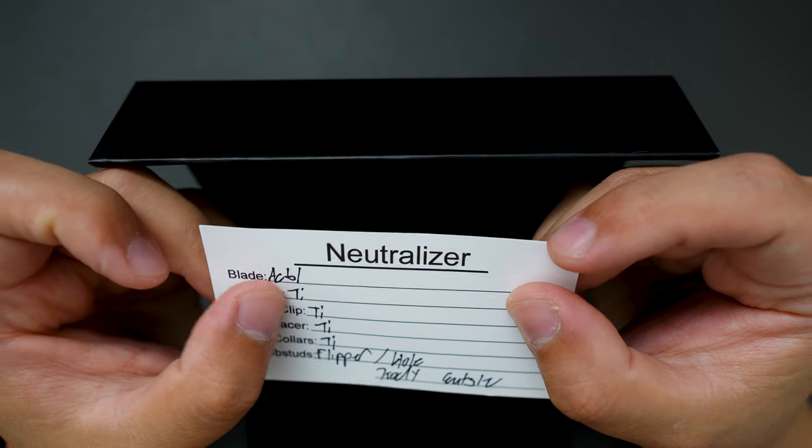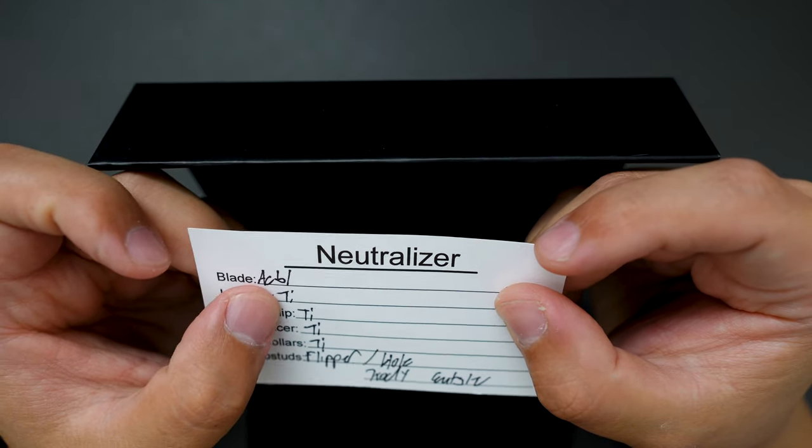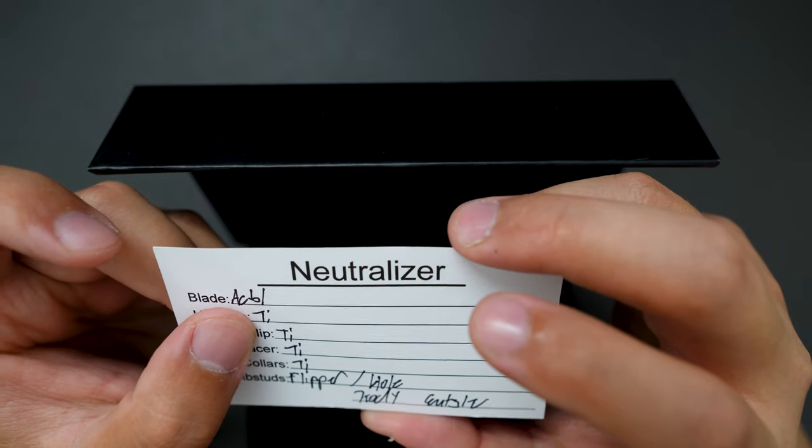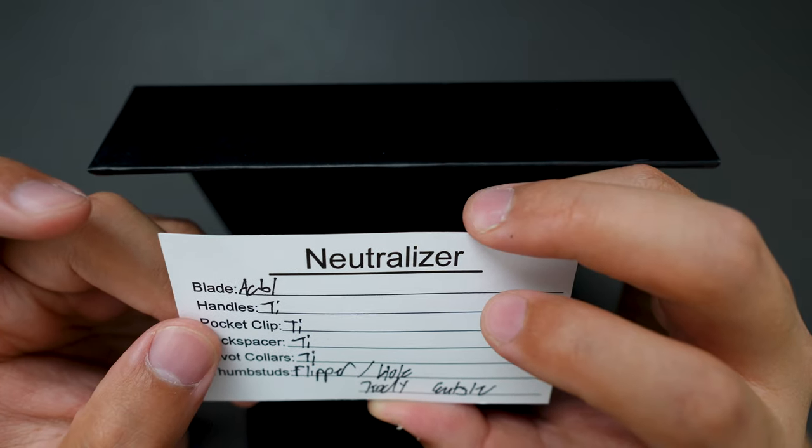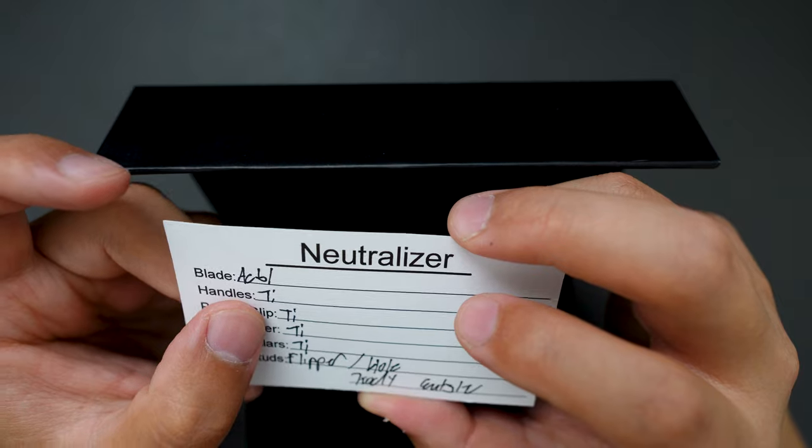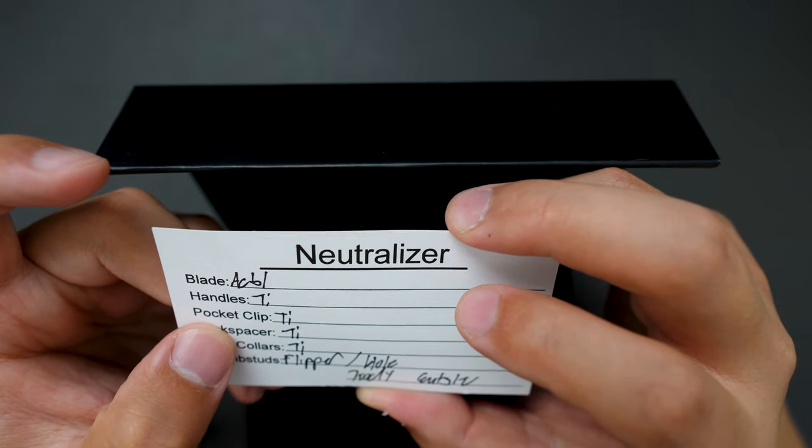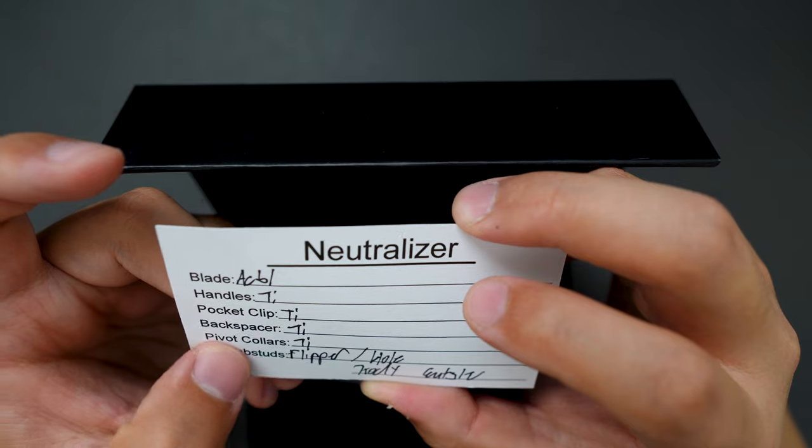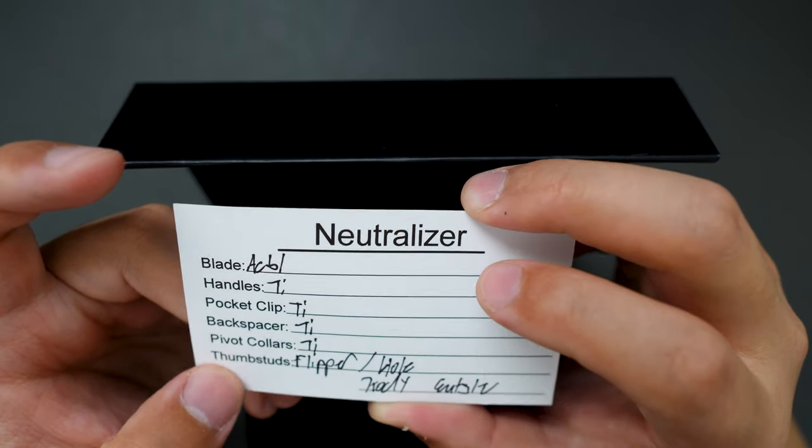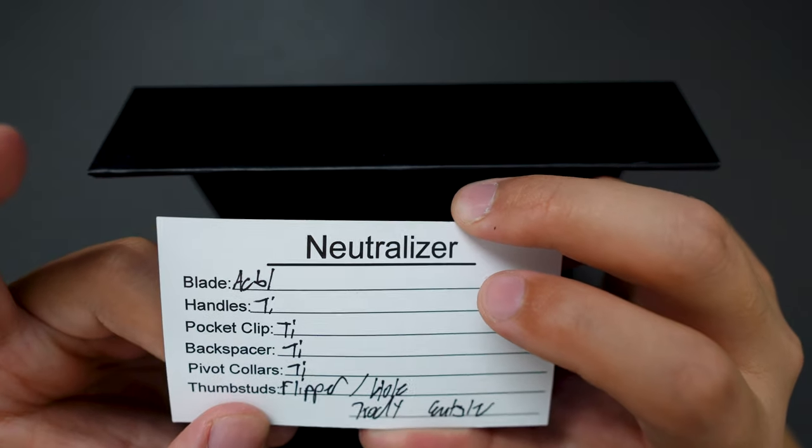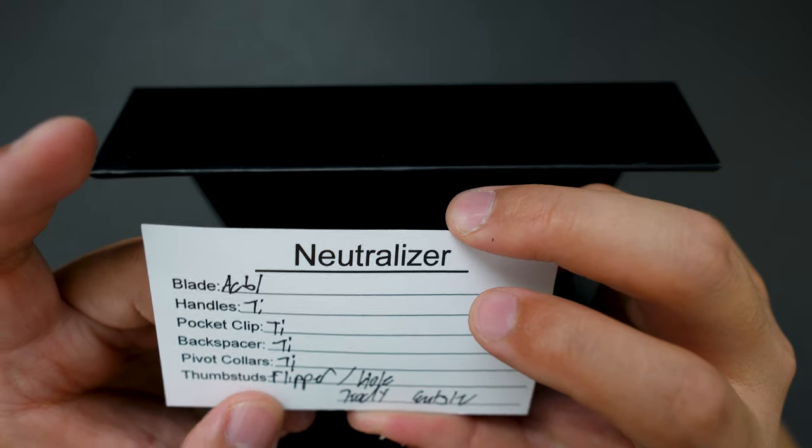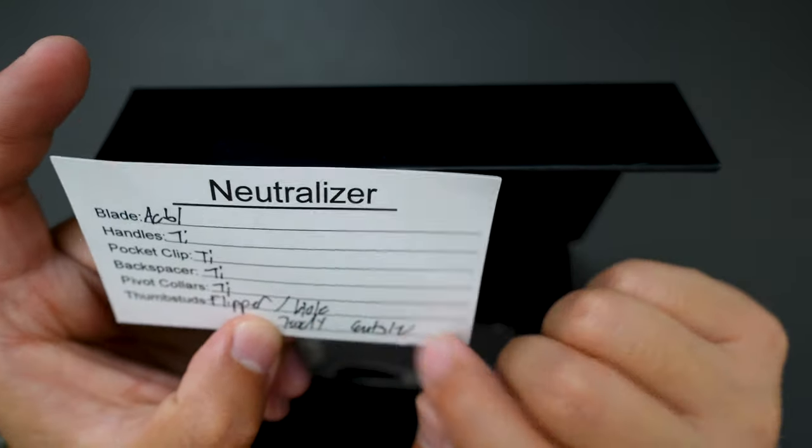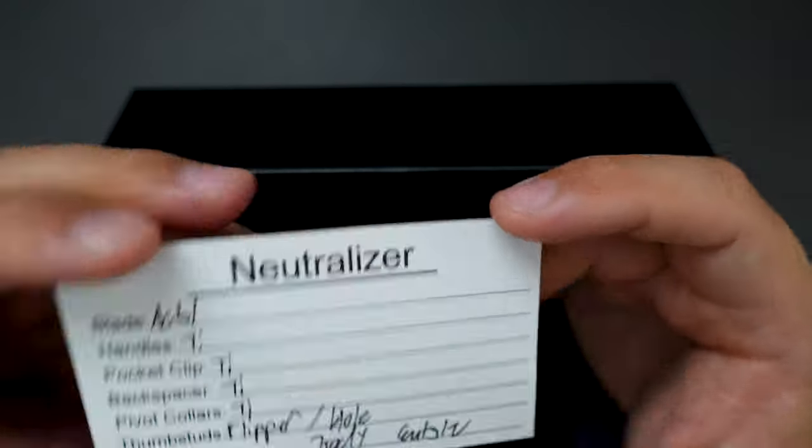And the blade steel is ACBL. I think this steel is higher-end steel that's similar to Magnacut. And the handles are titanium, pocket clip titanium, backspacer titanium, and pivot collar as titanium as well. Deployment is a flipper and thumb hole. That's Cody's signature in there.